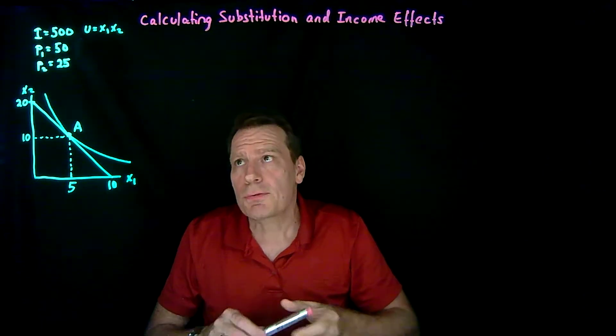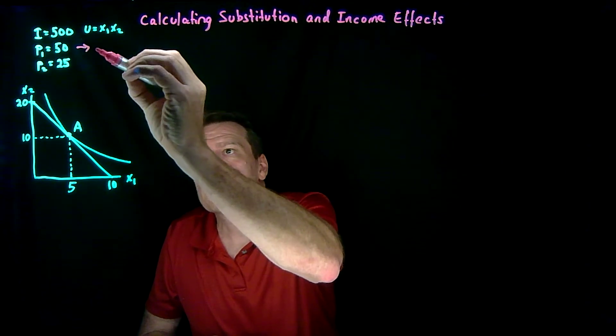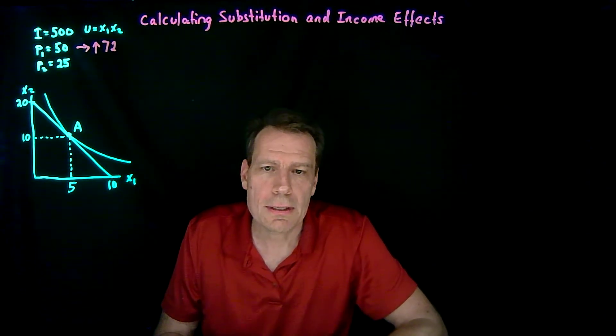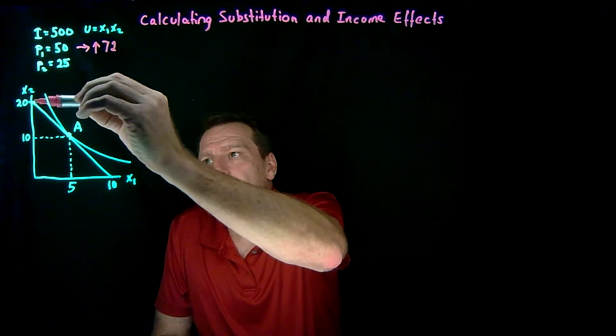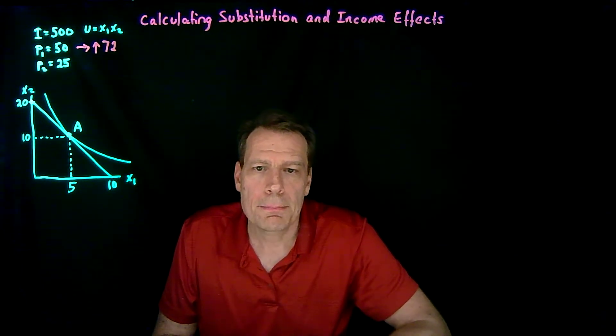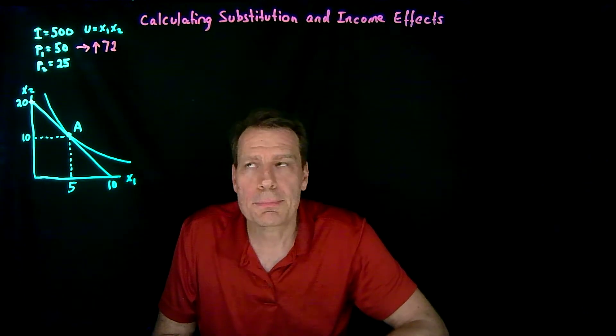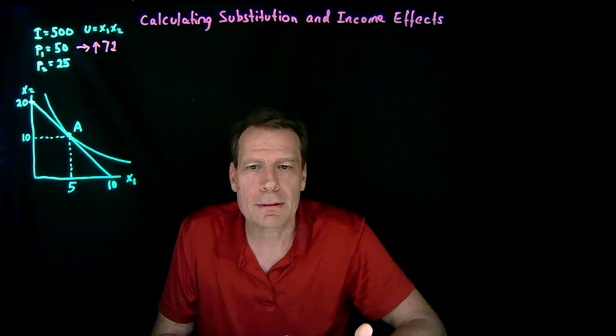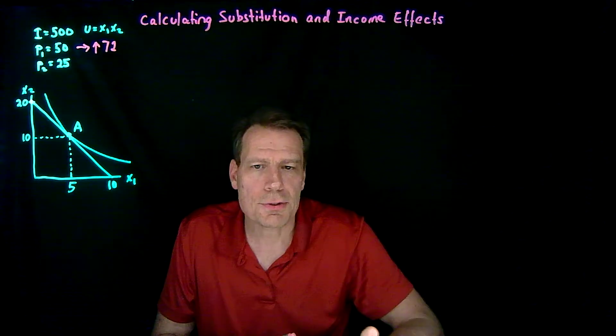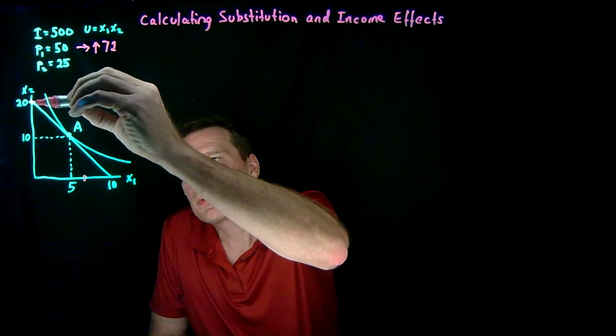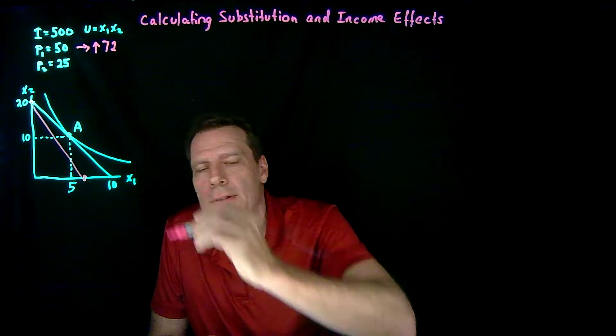Now suppose that the price of good 1 increases to 72. We know how to illustrate this in the graph. If all you buy is good x2, you'd still be able to buy exactly the same as you did before. But if all you did was buy x1, you wouldn't be able to buy as much. You'd now be able to buy 500 divided by 72, which is about 6.94. So we're going to assume that you can consume fractions of this good. So somewhere over here, there's the horizontal intercept, and so we get a new budget constraint that's steeper and looks like this.